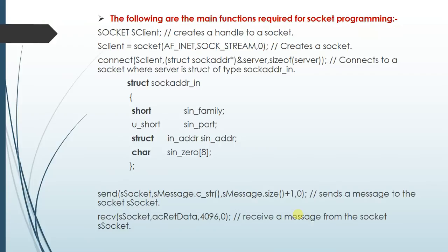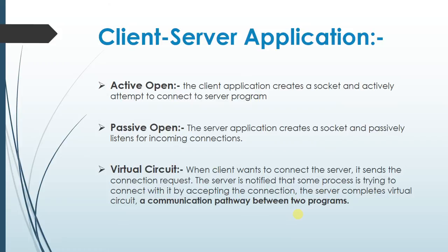Now let's discuss about client-server application. There are three things: active open, passive open, and virtual circuit. The client application creates a socket and actively attempts to connect to the server program, which is active open. The server application creates a socket and passively listens for incoming connections, which is passive open. When the client wants to connect to the server, it sends a connection request. The server is notified and by accepting the connection, completes the virtual circuit — a communication pathway between two programs.